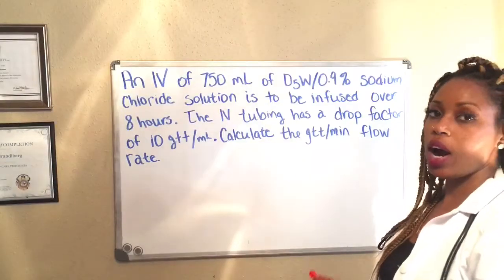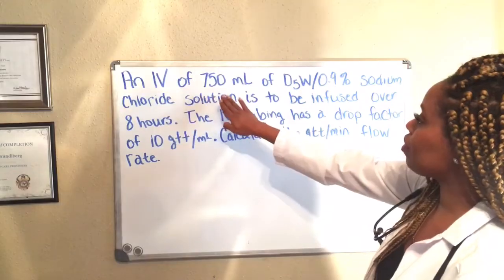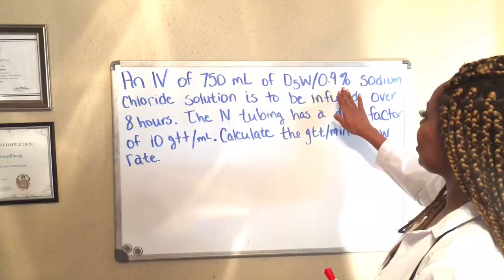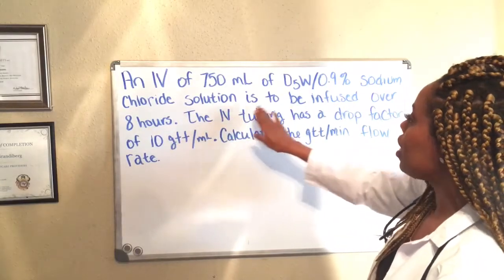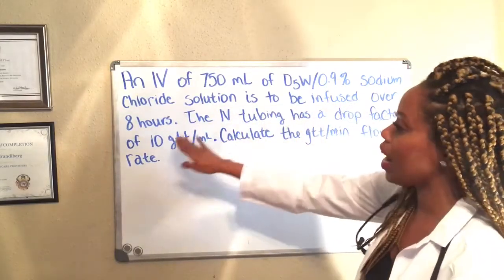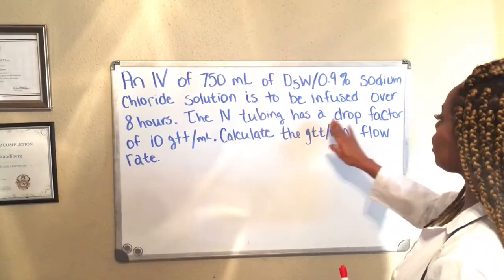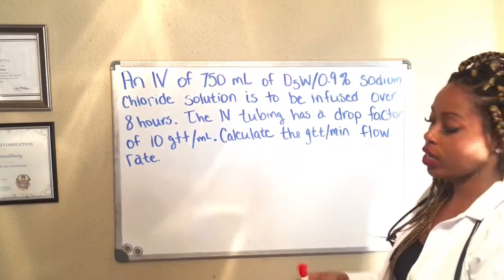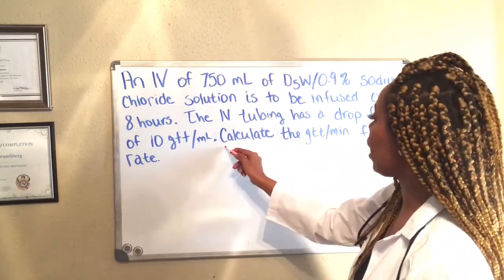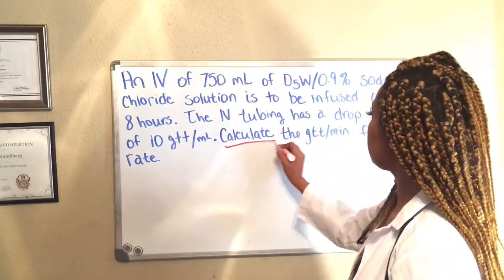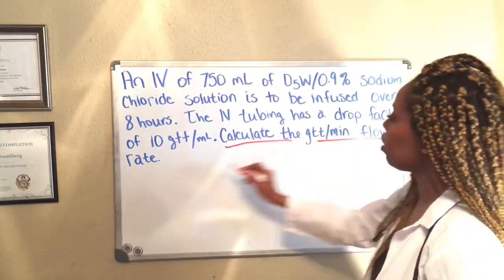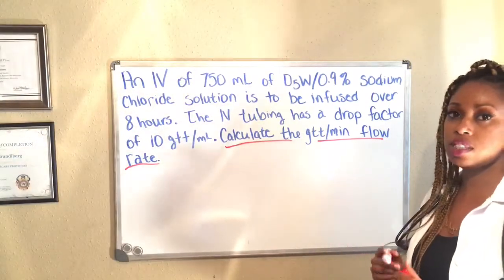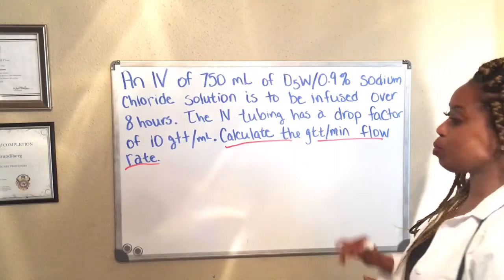So our problem reads: an IV of 750 milliliters of D5W 0.9% sodium chloride solution is to be infused over eight hours. The IV tubing has a drop factor of 10 drips per milliliter. What they want us to do is calculate the drips per minute flow rate.